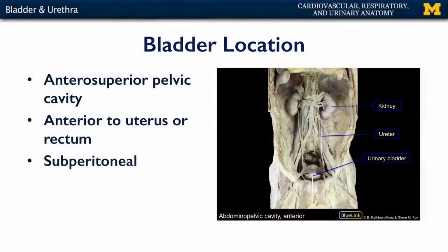Let's talk about the urinary bladder and the urethra. The urinary bladder is found in the anterosuperior pelvic cavity. It is actually attached to the remnant of the urachus that forms the median umbilical fold on the anterior abdominal wall.